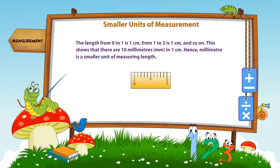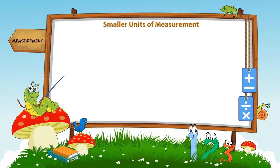Hence, mm is a smaller unit of measuring length. 10 mm equals 1 cm. Look at the following table to know the various units of measuring length.